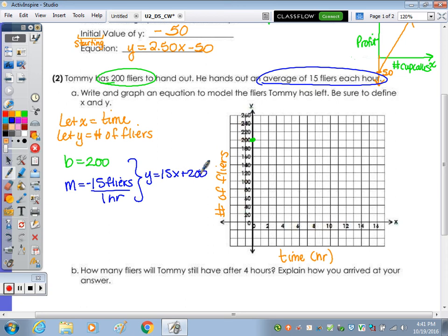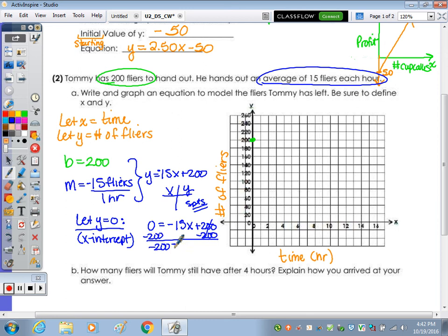You can go to your table of values on the calculator to fill that in. I want to see at least five points. But in this case, I know the y-intercept, so I'm just going to find the x-intercept. I'm going to let y equal zero to find the x. When I let y equal zero, it's going to be zero equals negative 15x plus 200. Subtract the 200, divide by negative 15, and x equals 13 and a third, or 13.33.